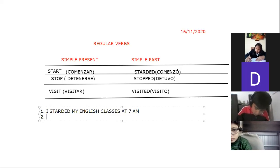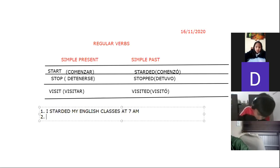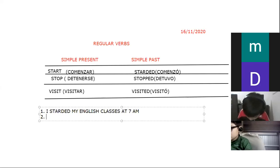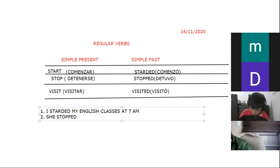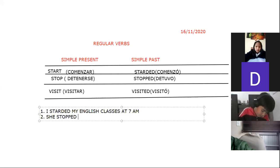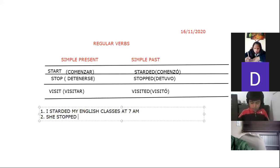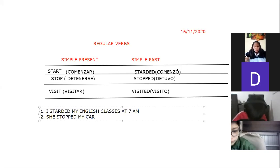Number two — Melanie Acosta, please help me with number two. For example: she — ella — stopped. She stopped... what? Help me. Emily says: she stopped my car. Very good! She stopped my car. Ella detuvo mi carro.